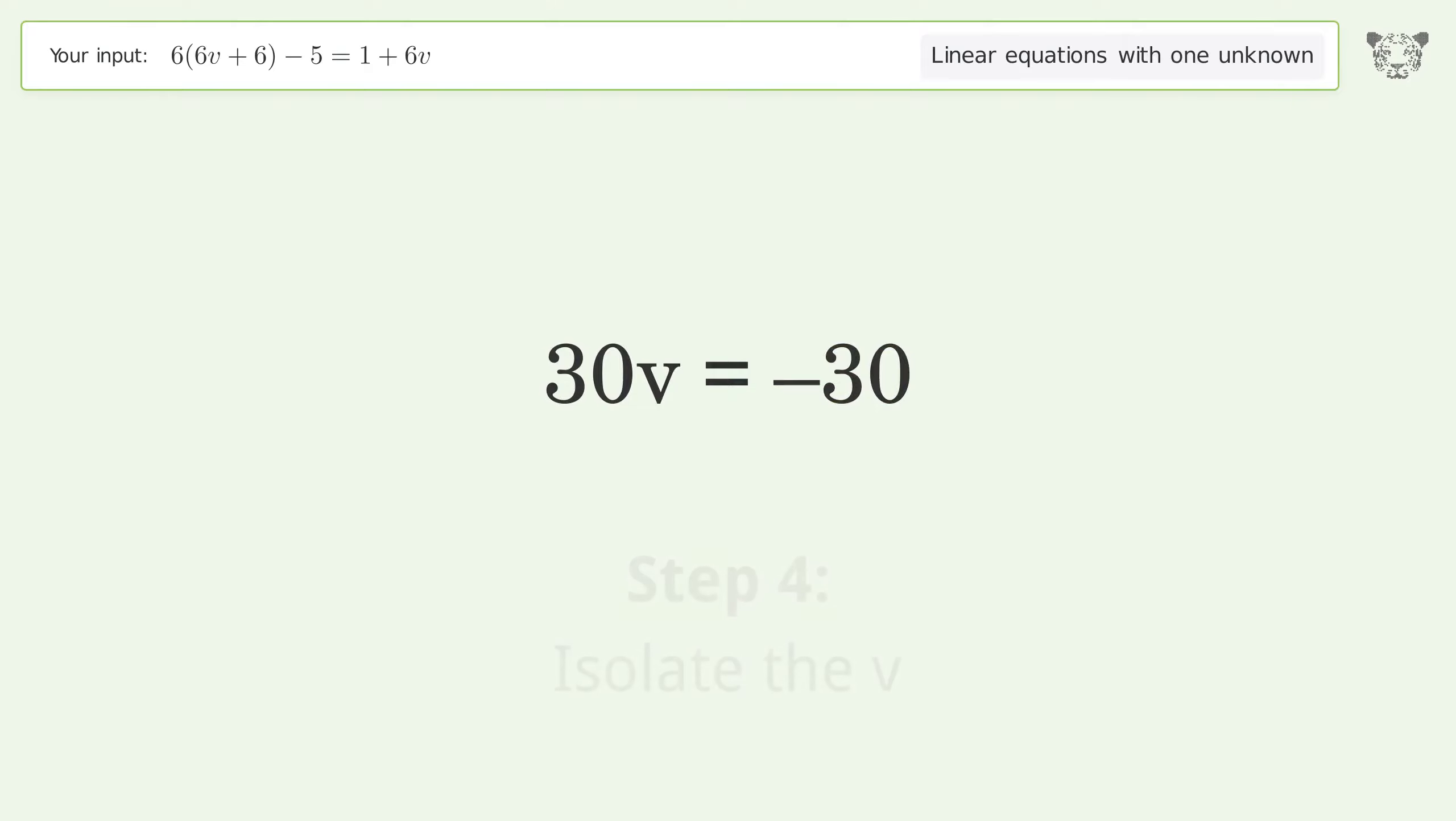Isolate the v. Divide both sides by 30. Simplify the fraction.